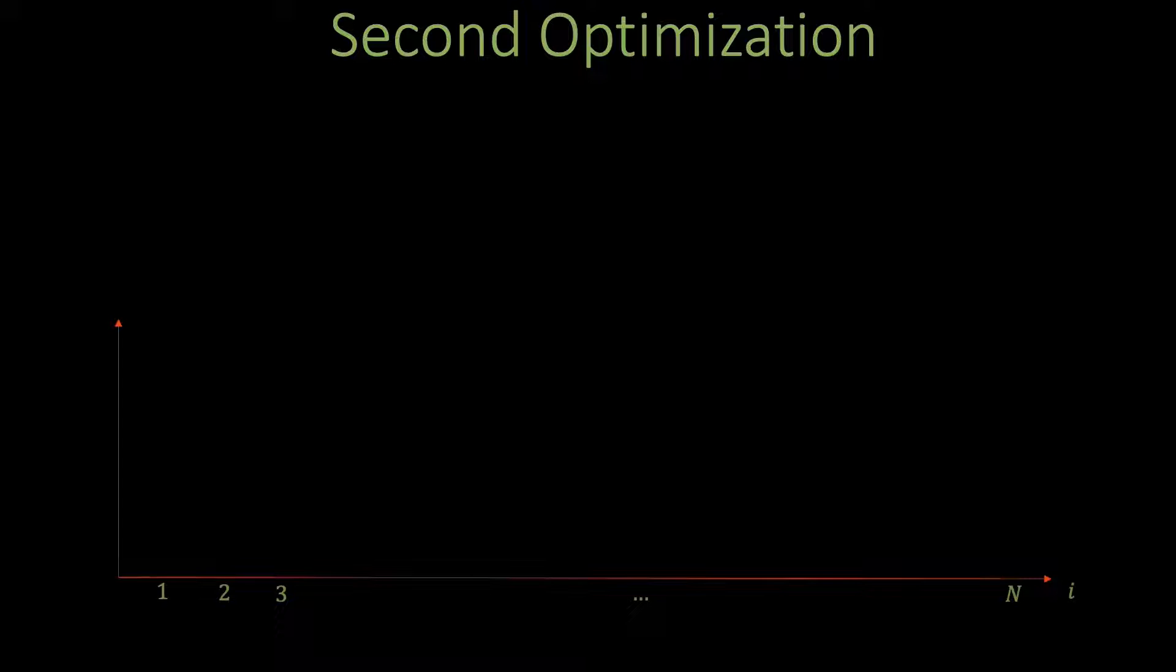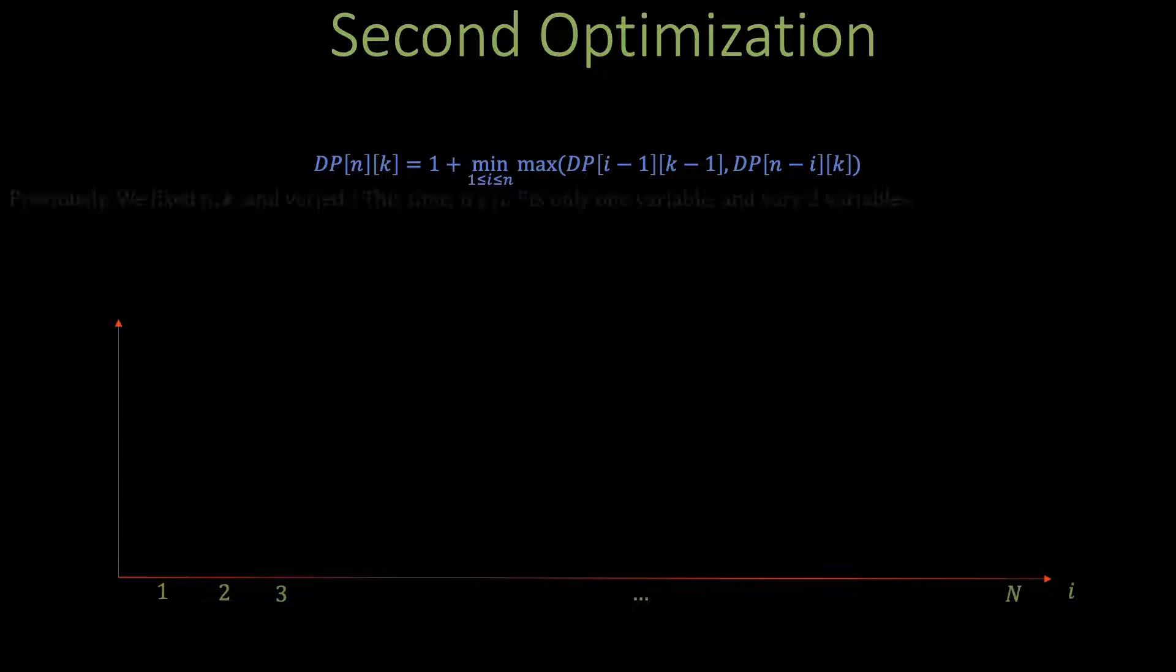In the previous video we used binary search to calculate dp[n][k] quickly. For each fixed n,k we would use binary search on i to find the i that minimizes the maximum of dp[i-1][k-1] and dp[n-i][k]. Now this works pretty well but oftentimes while trying to speed up dynamic programs it's also very useful to try to fix a fewer number of variables and try to solve the problem for the remaining variables slightly faster.